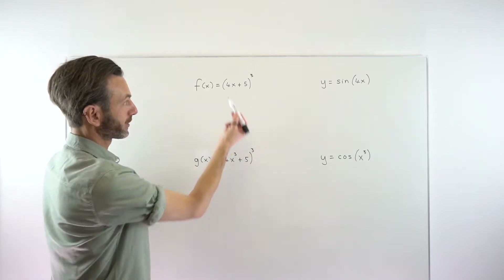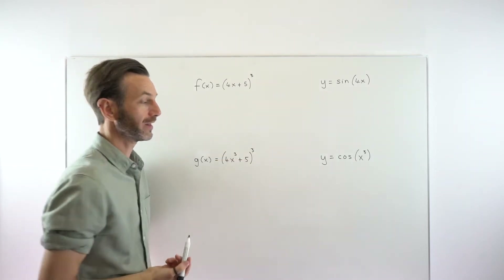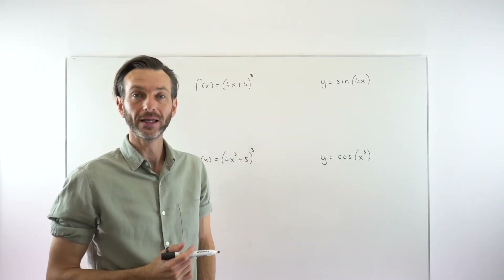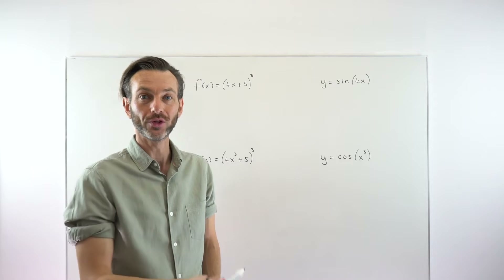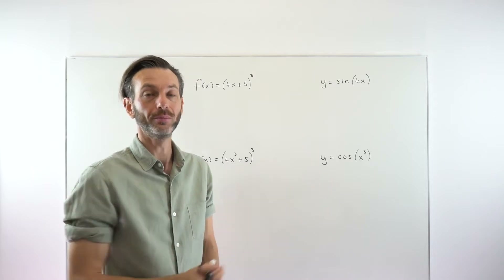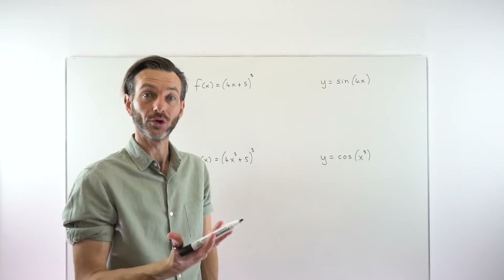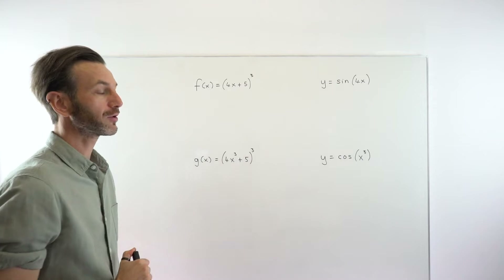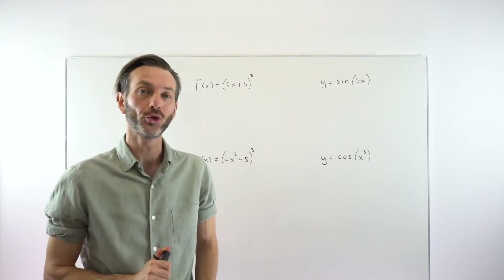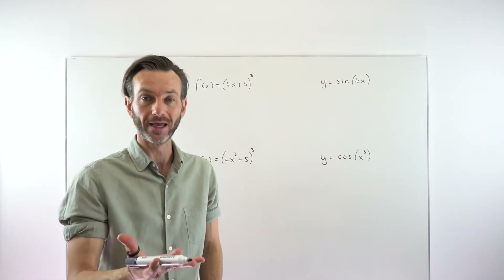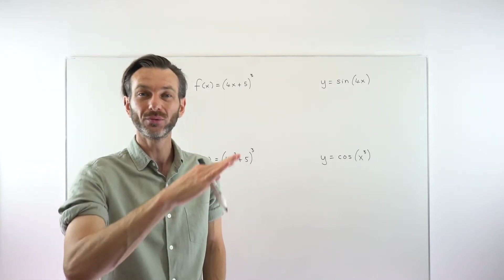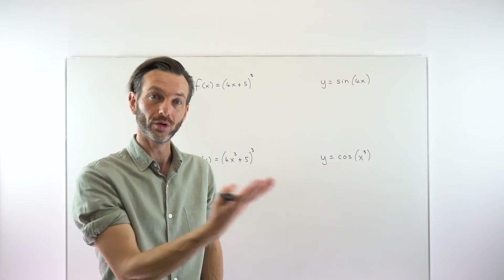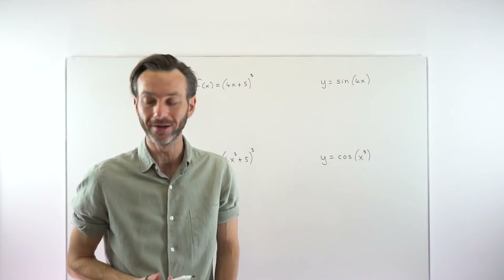These are all examples of composite functions, but you can see they look quite different. Later in this video we'll look at some further examples of composite functions that we can use the chain rule on. Let's start by considering what the chain rule actually is — what it says — and some of the versions of the chain rule that you might see, some of which are more instructive than others.